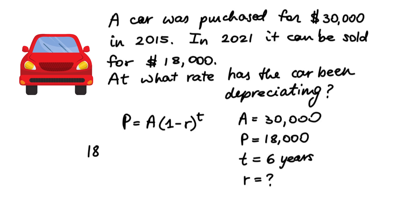And we're trying to determine the rate at which the car has been depreciating. So, 18,000 = 30,000(1 - r)^6. Let's try to solve this. Our first step here will be dividing by 30,000 on both sides. We're trying to isolate for r, so we're doing reverse operations in order.